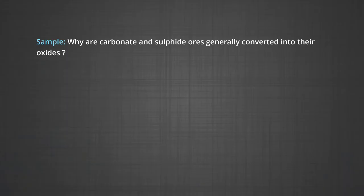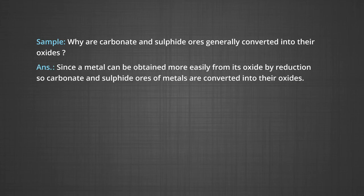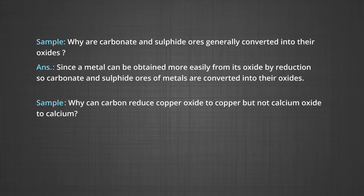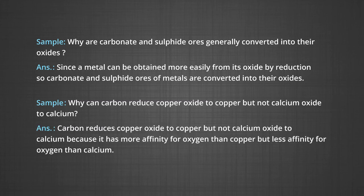You will study about production of a good reducing agent and the suitable temperature for reduction of metal oxide to metal in the next module of this chapter. Let us understand why carbonate and sulphide ores are generally converted into their oxides — this is because a metal can be obtained more easily from its oxide by reduction. So, carbonate and sulphide ores of metals are converted into their oxides. Also, why can carbon reduce copper oxide to copper but not calcium oxide to calcium? This is because carbon has more affinity for oxygen than copper, but less affinity for oxygen than calcium.